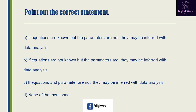Next question: point out the correct statement. Option A is 'if equations are known but the parameters are not, they may be inferred with data analysis'. Option B is 'if equations are not known but the parameters are, they may be inferred with data analysis'. The last option is none of the mentioned. The right answer will be A, because usually the random component of data is measurement error.